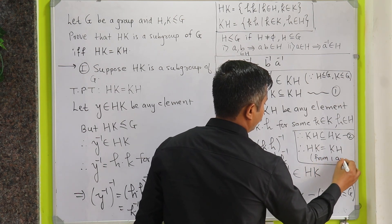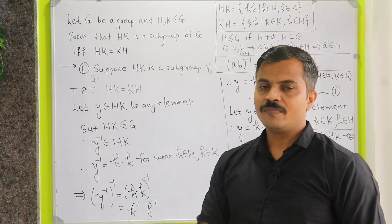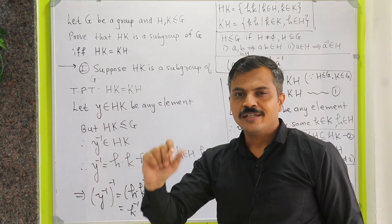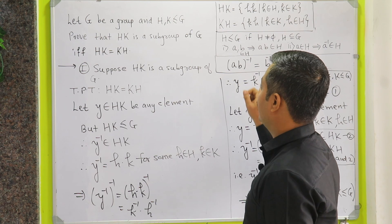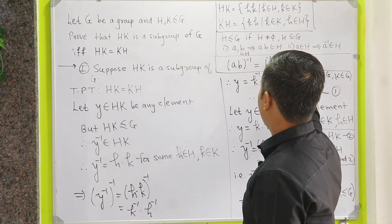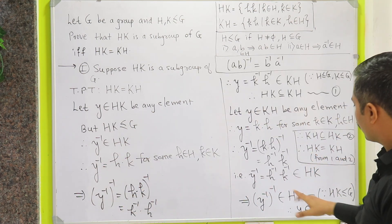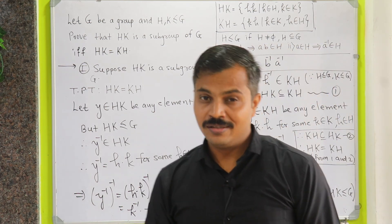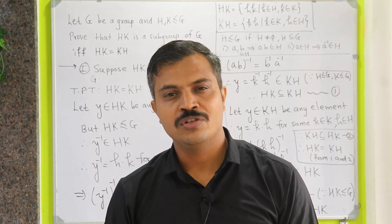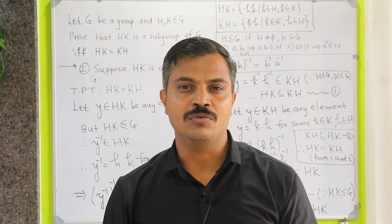From (1) and (2), HK equals KH, which is exactly what we wanted to prove. The key step of the theorem is: whenever we have an element of HK, we use the fact that HK is a subgroup of G — specifically the second condition of the two-step test, that the inverse of an element in HK also lies in HK. We have now shown that if HK is a subgroup of G then HK equals KH. Next, we will assume HK equals KH and prove that HK is a subgroup of G.